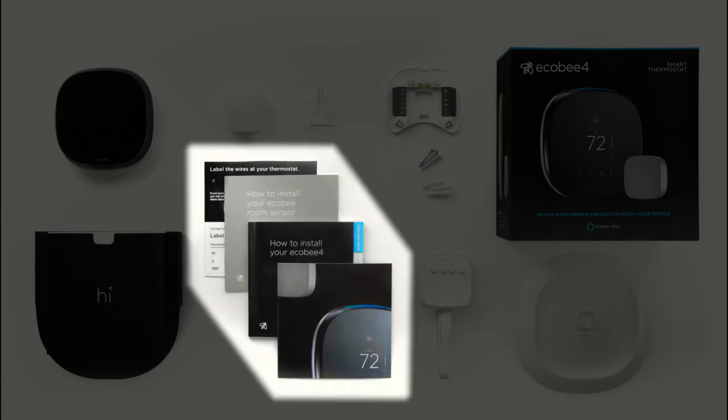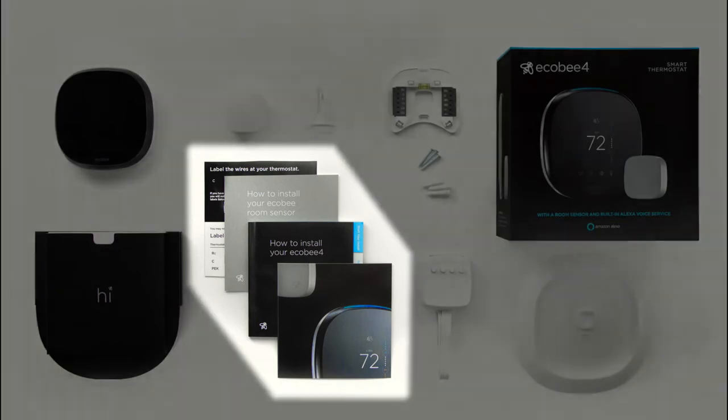Mounting screws and plugs, your Ecobee 4 install manual, your room sensor install manual, wire label stickers, and your Amazon Alexa voice card.